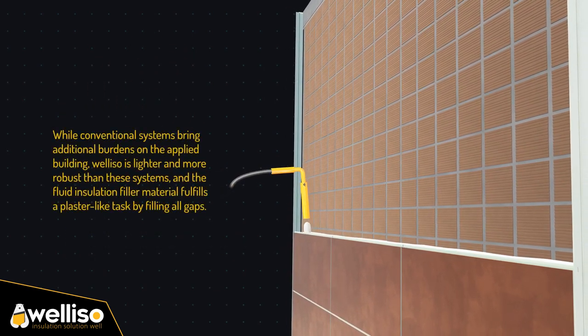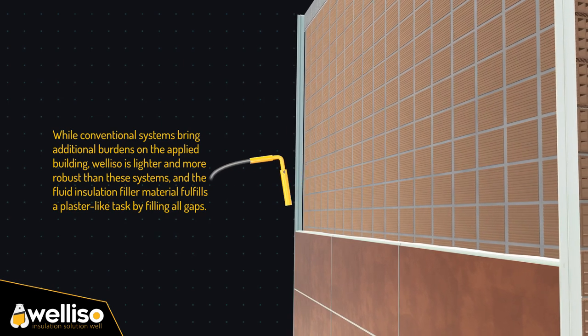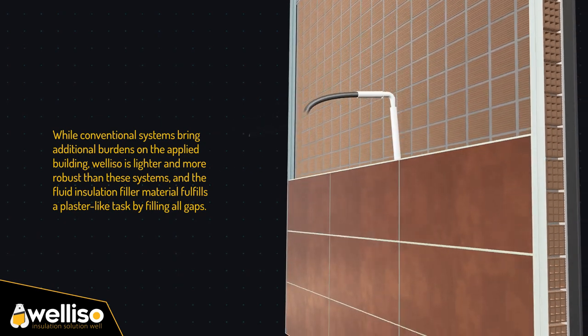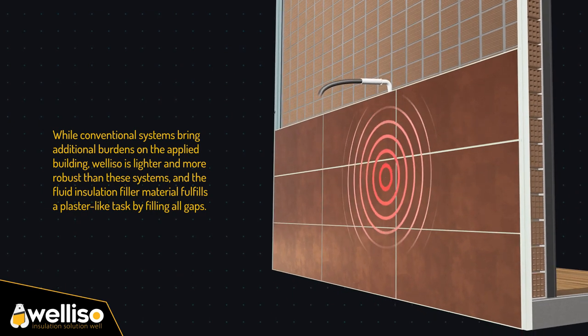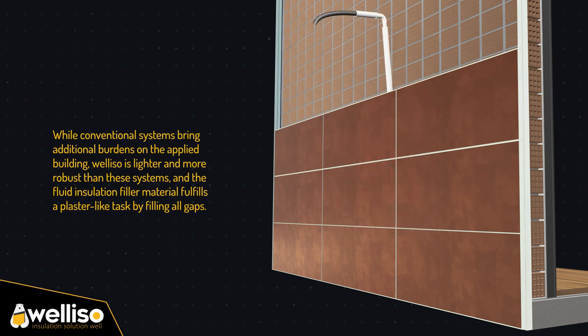While conventional systems bring additional burdens on the applied building, Veliso is lighter and more robust than these systems, and the fluid insulation filler material fulfills a plaster-like task by filling all gaps.